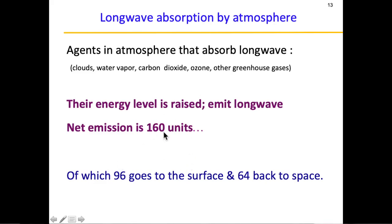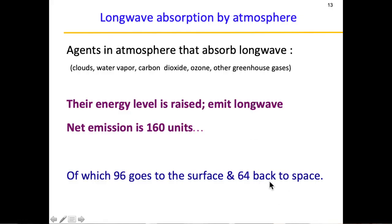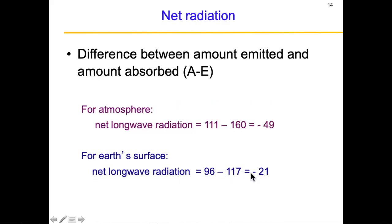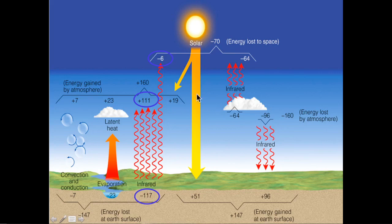Out of this 160 units, 96 units of long wave radiation goes back to the surface because of the presence of clouds, and 64 goes back to space. So we now have a balance between incoming short wave — 51 to ground and 19 to atmosphere — and outgoing long wave: 160 absorbed by atmosphere, 96 sent back to the surface as infrared, and 64 going back to space.